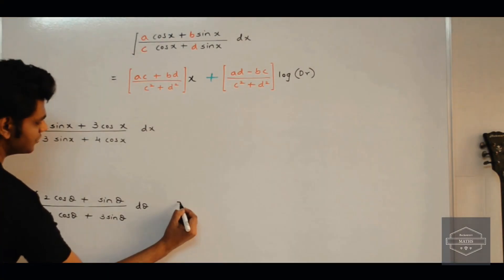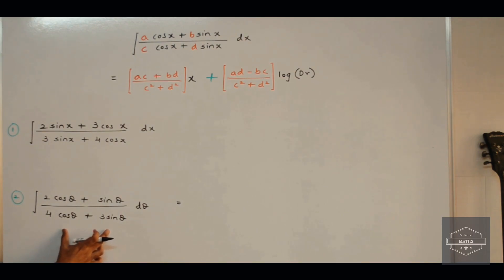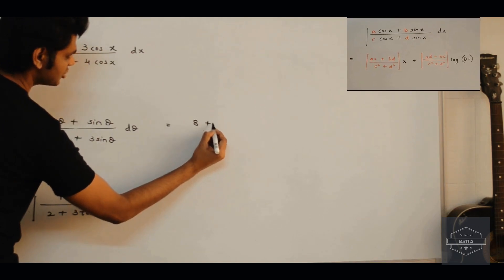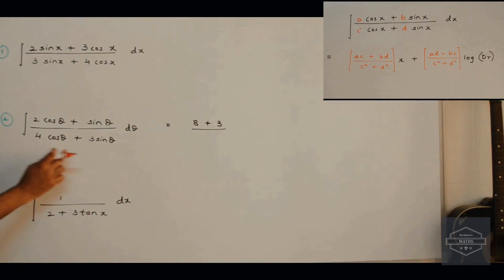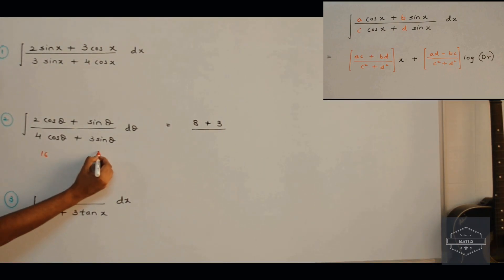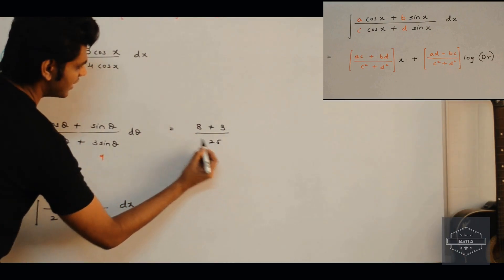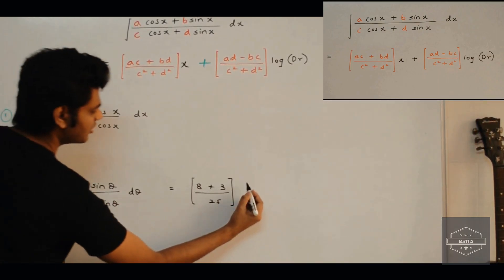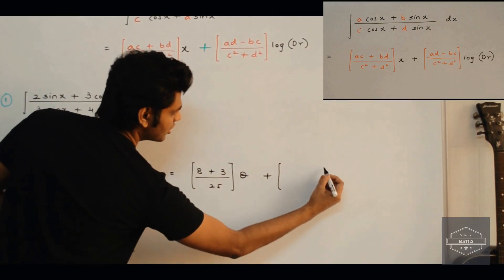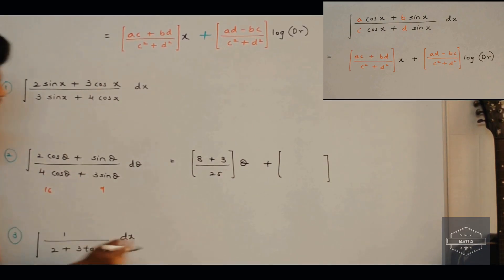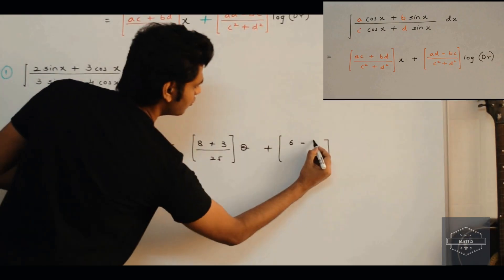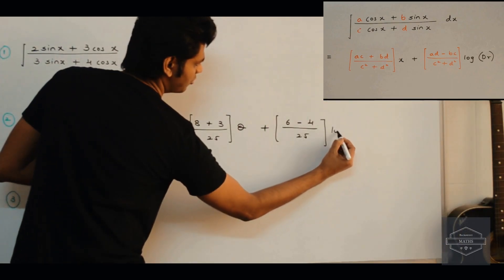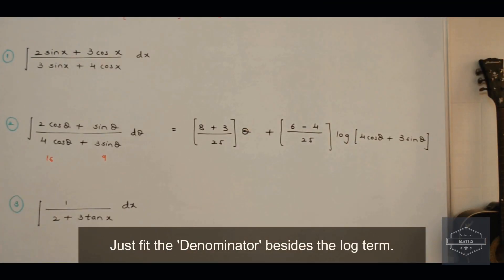Now let's look at question number two. The structure of this sum is exactly the same as our standard formula, so we can straight away apply the shortcut. The first term: 2 into 4 is 8, plus 1 into 3 is 3, upon 4 squared plus 3 squared — that is 16 plus 9 equals 25. This is the first term, and since we are dealing with theta here, we multiply it by theta. For the second term using the criss-cross pattern: 2 into 3 is 6, minus 1 into 4 is 4, upon 25, and this is multiplied by log of the denominator. And there is our final answer.